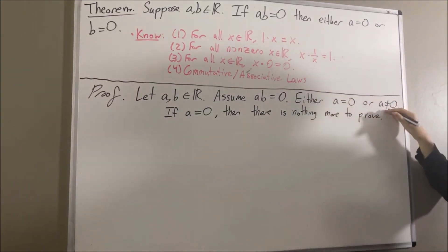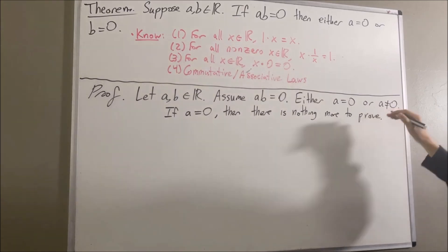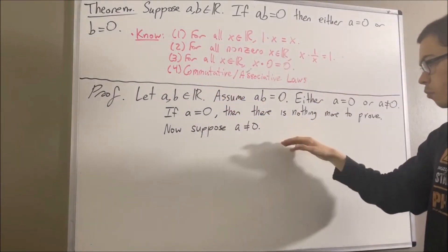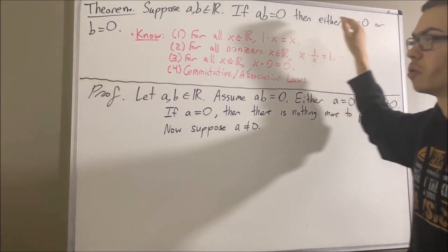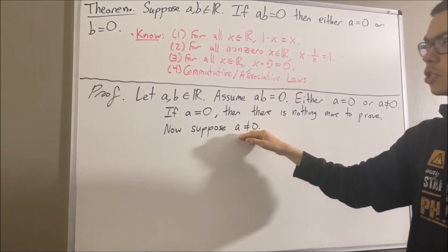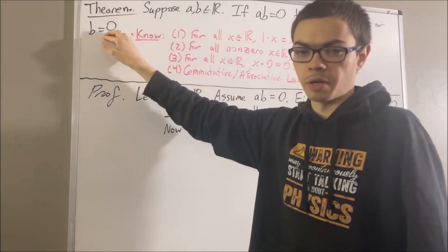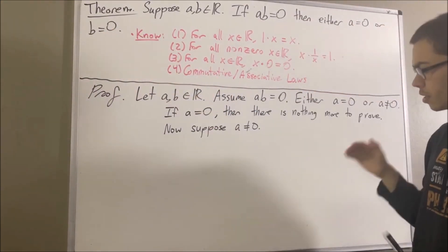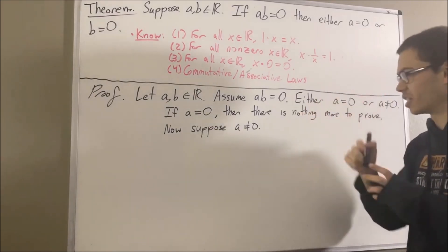Now let's move on to the other case where A is not equal to 0. And again, we want to prove that either A is equal to 0 or B is equal to 0. But in this case, it makes more sense to try and prove that B is equal to 0. And to do that, we're going to establish a chain of equalities. So check this out.